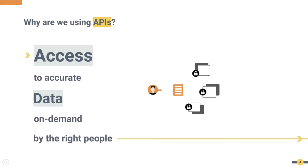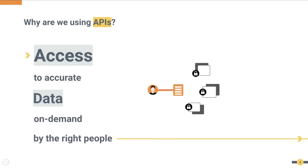This example helps us understand the rest of the webinar. These APIs give us the access we require from a wide range of internal systems that we cannot or do not want to access individually. They give us access to accurate data on demand, by the right people.